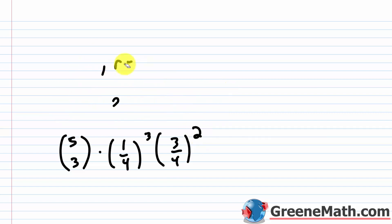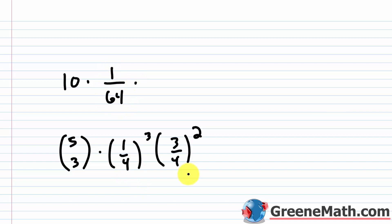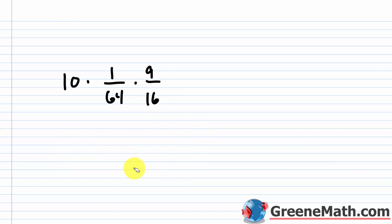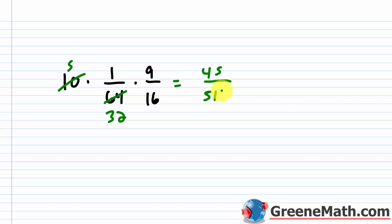Plugging in: five choose three equals 10; one fourth cubed equals one over 64; three fourths squared equals nine over 16. Before multiplying, cancel a factor of two from 10 and 64, giving five and 32. So you have five times nine over 32 times 16, which is 45 over 512. That's your probability of being assigned to the front row exactly three days out of five.